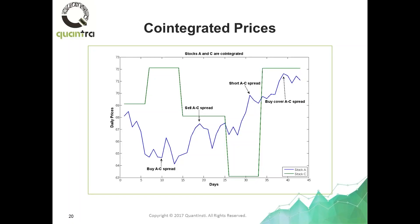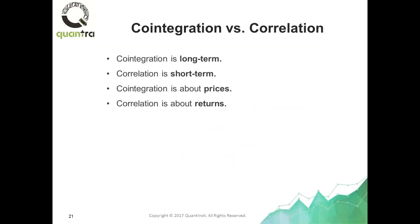So these two time series are very much co-integrated because they can be made to form a stationary portfolio, but they are not at all correlated because they can move in very different directions from day to day. To recap: co-integration is about long-term behavior of prices, while correlation is about short-term behavior of returns. Co-integration is about price; correlation is about return.